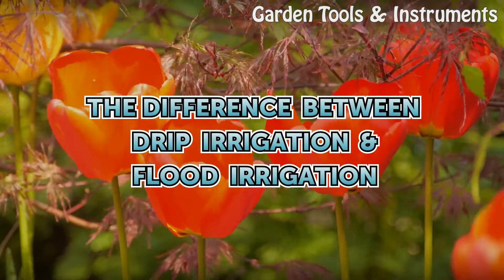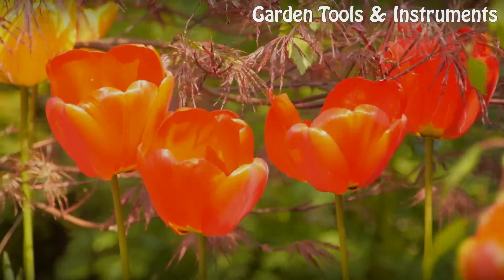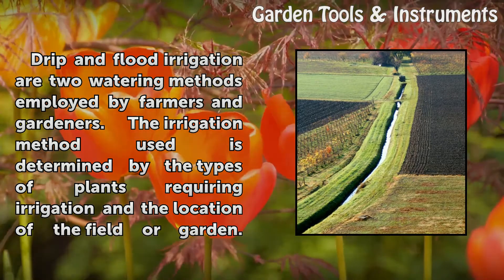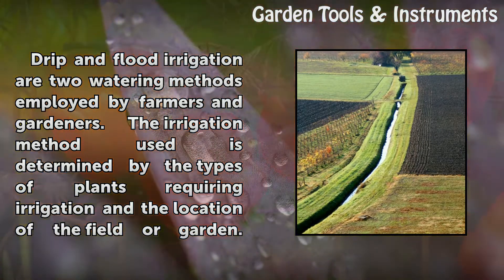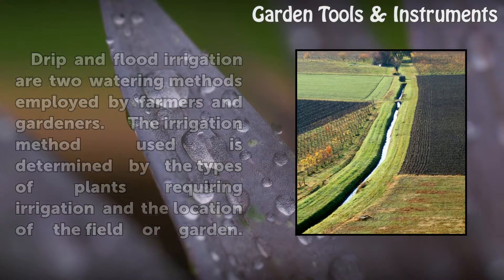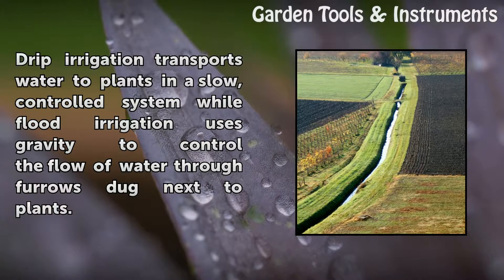The difference between drip irrigation and flood irrigation. Drip and flood irrigation are two watering methods employed by farmers and gardeners. The irrigation method used is determined by the types of plants requiring irrigation and the location of the field or garden. Drip irrigation transports water to plants in a slow, controlled system, while flood irrigation uses gravity to control the flow of water through furrows dug next to plants.